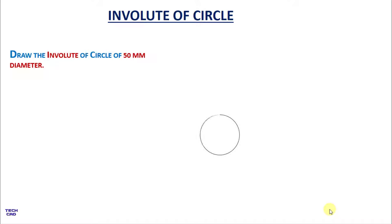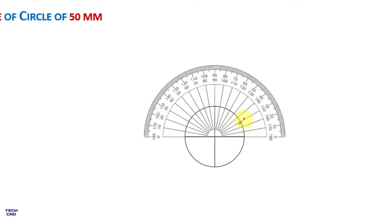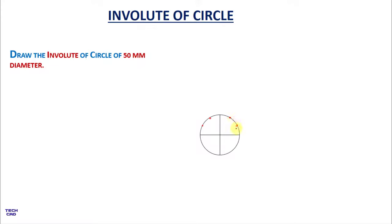Then draw the diameter lines. Now divide this complete circle into 12 equal divisions. With the help of a protractor we can easily divide the circle into 12 equal divisions. Take the protractor, mark 30 degrees from one side and 60 degrees, and from the left side also 30 degrees and 60 degrees. With the help of a scale, join these lines and extend them further downwards.